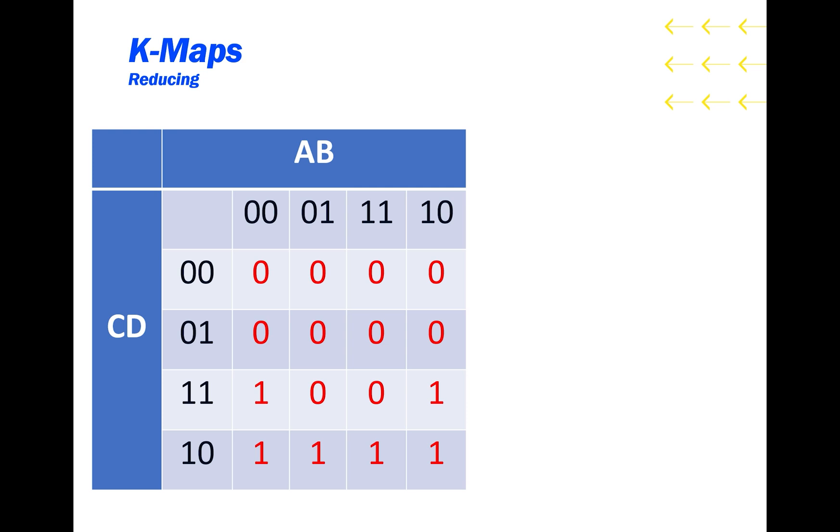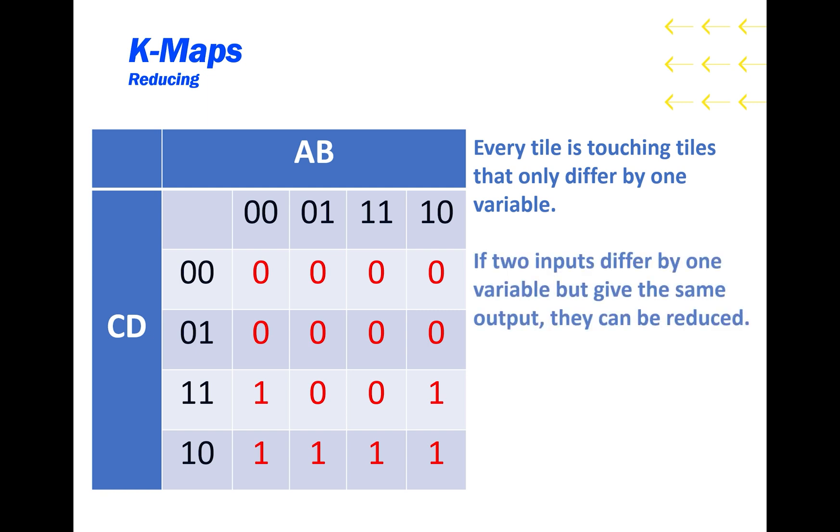Now that we have our K-map, how do we use it to reduce our function? Well, remember that on a K-map, every tile is touching other tiles that differ by only one variable. And if two inputs differ by one variable but give the same output, they can be reduced. Therefore, if a one tile is touching another one tile on a K-map, it can be reduced.